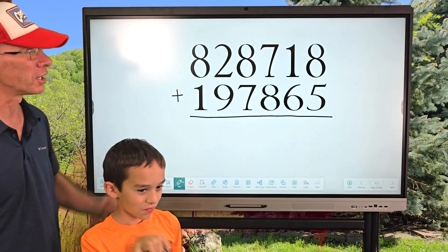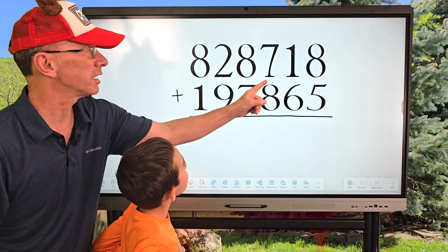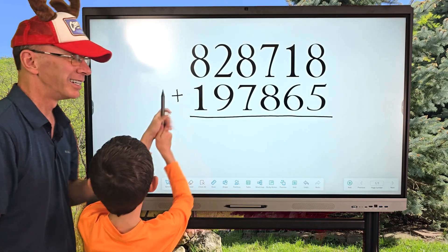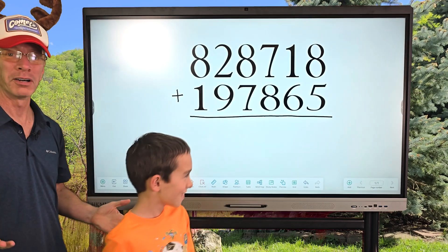All right, first of all, you're going to start with the ones, aren't you? These are the ones. You got the tens, hundreds, thousands, ten thousands, hundred thousands! Millions! No millions today.